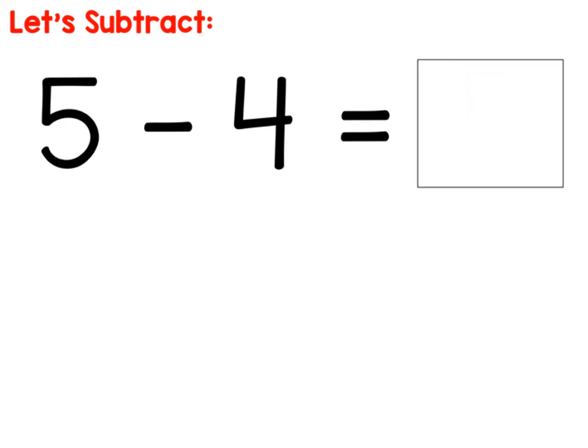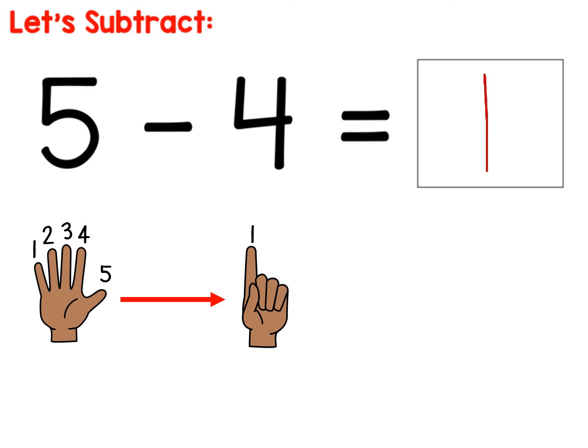Five minus four. So put up five fingers. That's going to be a whole hand. Then it says minus four, so that means take away four. So you have all five fingers up. Go ahead and put down one, put down two, put down three, put down four. How many do you have left? You should have one. So five minus four equals one.